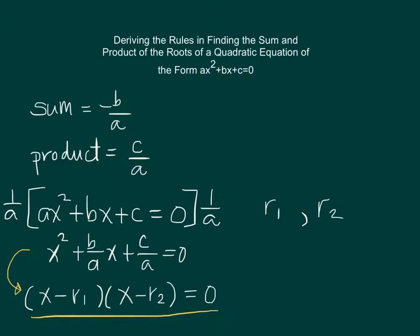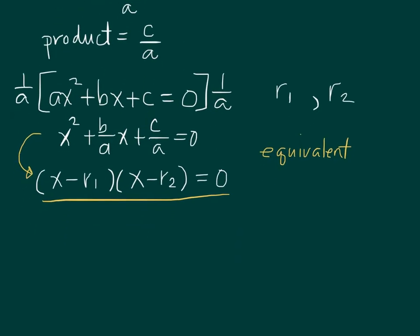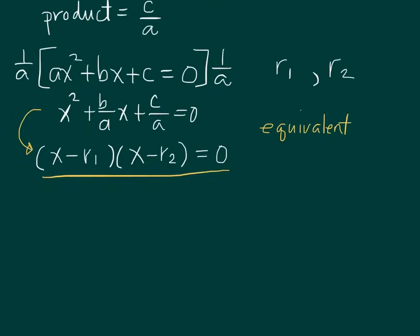This is very critical in understanding how the rules were derived, because x minus r1 times x minus r2 is just the factored form of x squared plus b over a times x plus c over a equals zero. Since it is the factored form, they must be equivalent. So if I simplify x minus r1 times x minus r2 equals zero, it should have the form x squared plus b over a times x plus c over a equals zero.